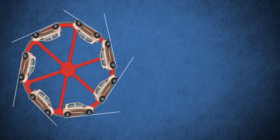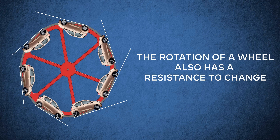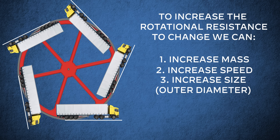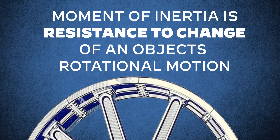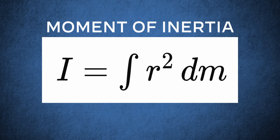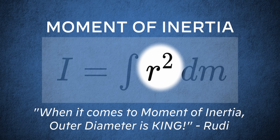When this big trailer drives into the same orange block, the trailer has a larger resistance to change, which means it will push the orange block further along. When it comes to the rotation of a wheel, it also has a resistance to change. To increase the rotational resistance to change, we can: one, increase mass; two, increase speed; or three, increase the size of the outer diameter. By increasing the resistance to change, we have increased the moment of inertia. In the formula for moment of inertia, we find radius squared, which means that a doubling of the diameter is a fourfold increase of inertia. Or as my friend Rudy said: when it comes to moment of inertia, outer diameter is king.